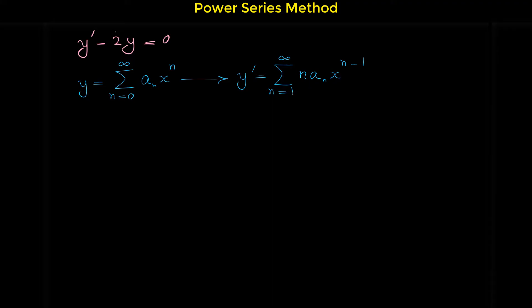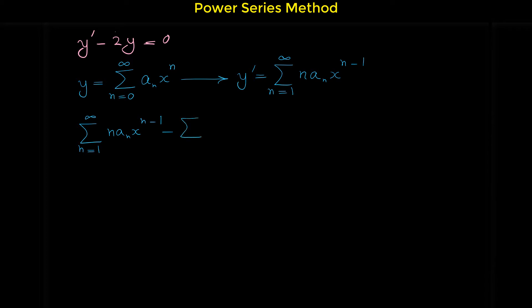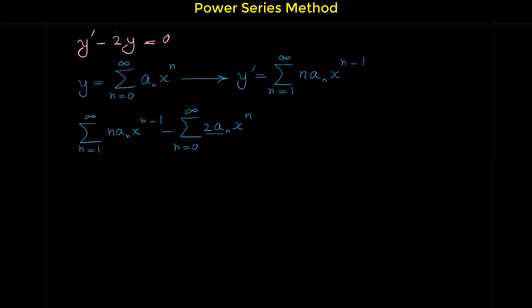Now that we have y prime and y, let's substitute them into the differential equation. Replacing y prime, we have sigma n from 1 to infinity of n a sub n x to the power of n minus 1, minus 2 times y, which gives minus sigma n from 0 to infinity of 2 a sub n x to the power of n, and this equals 0.